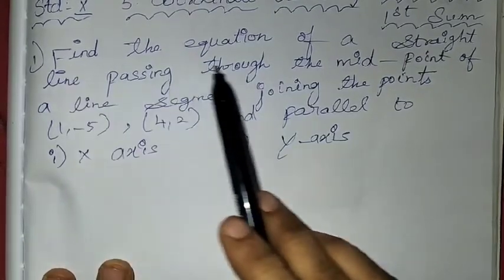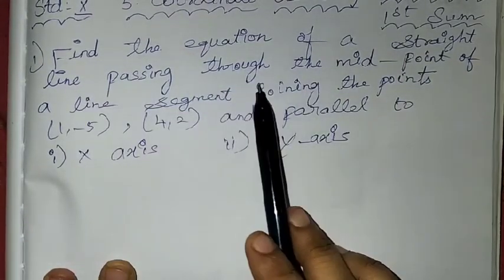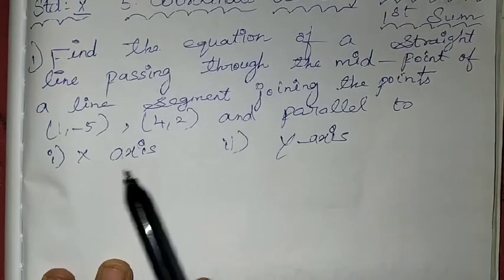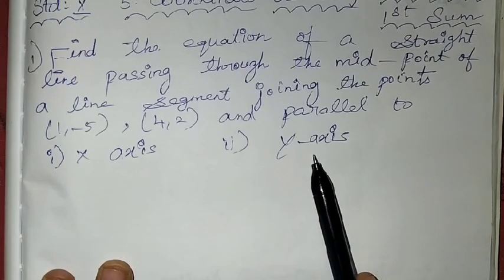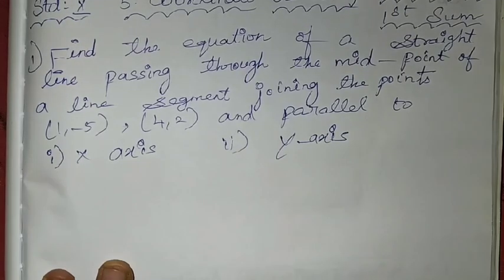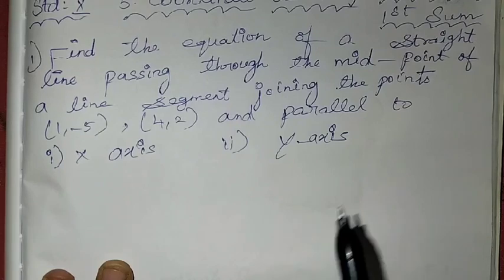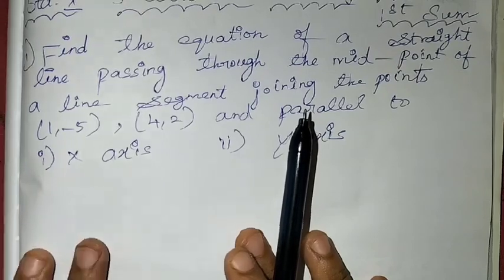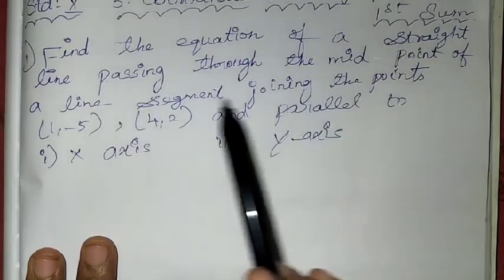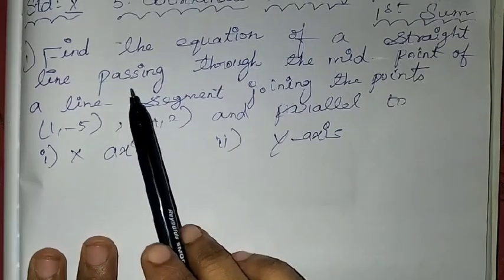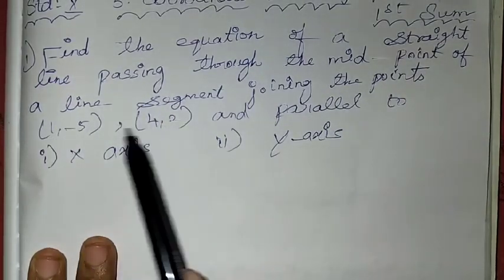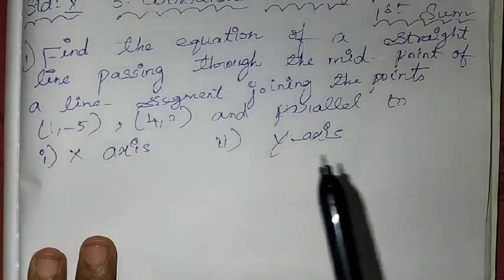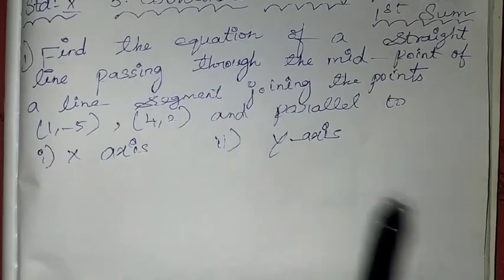In this sum, find the equation of a straight line passing through the midpoint of a line segment joining the points (1, -5) and (4, 2), and parallel to x-axis and y-axis. Two subdivisions are given and it is clearly mentioned in the question that we want to find the equation of a straight line. That straight line should be passing through the midpoint of these two points. That means we want to find the midpoint for these two points and then with that midpoint we want to form an equation parallel to x-axis and parallel to y-axis.